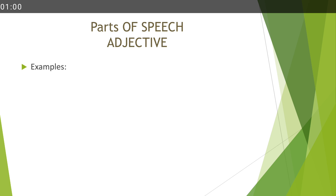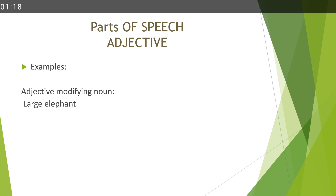For example, if we modify the noun with adjective: 'Large elephant.' Elephant is a noun — it's a name, so it's a noun. 'Large elephant' — 'large' is the adjective that describes the quality. Another example: 'Empty house.' House is a noun. 'Empty' describes the condition of the house. So 'empty' is the adjective here.